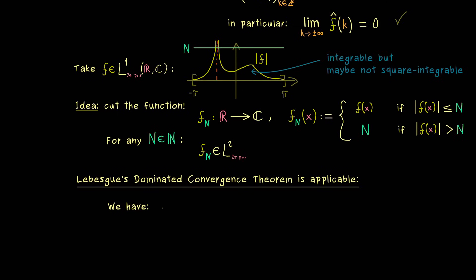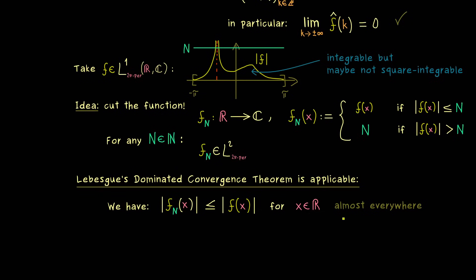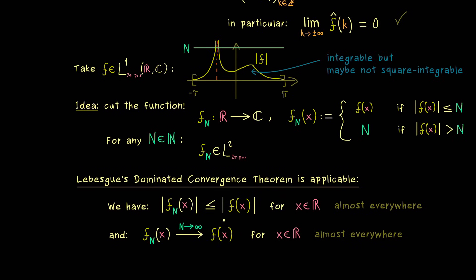As the name suggests, we need a dominating function, and this can be our original function f. The inequality is clear from how we defined the cut version, and we need it for every n and for almost every x. We also need pointwise convergence: when n tends to infinity, fn of x should tend to f of x almost everywhere. As we increase n, we cut less and less of the original function, so for any fixed point x this convergence will eventually happen.